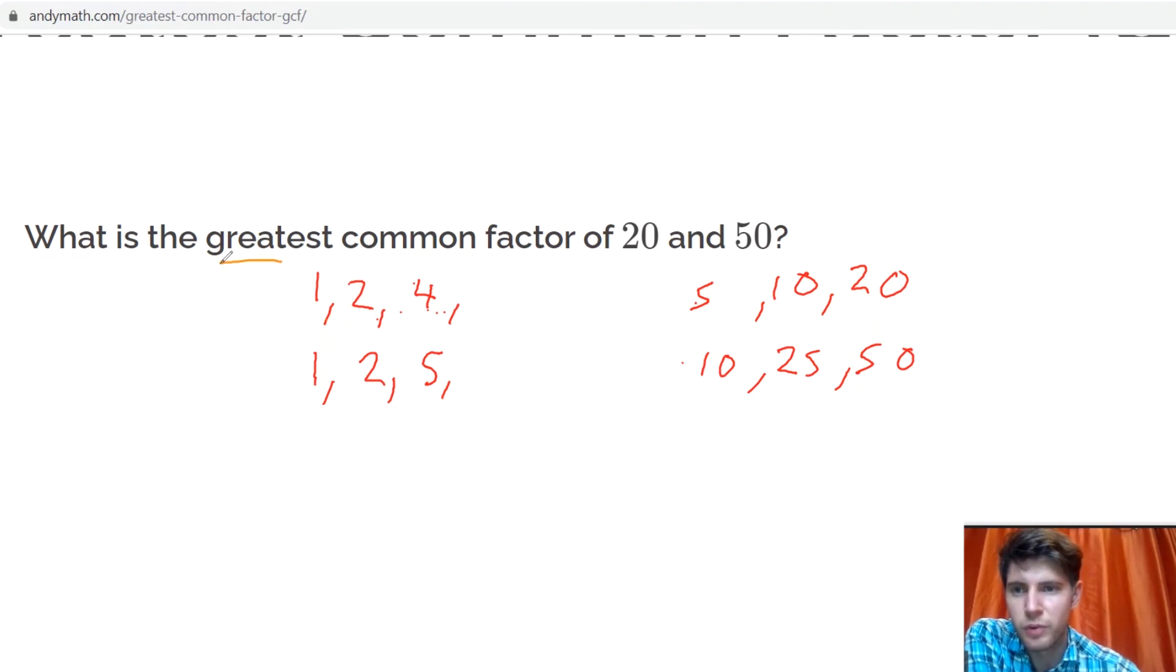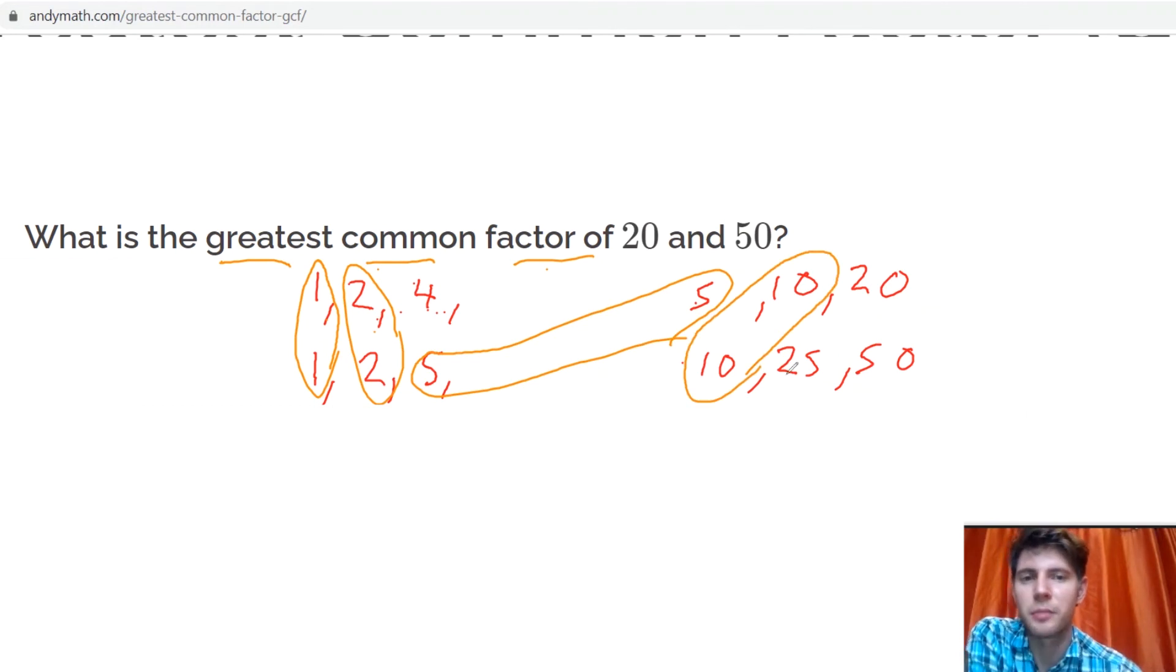This says the greatest common factor. Notice how we have a lot of common factors. We have 1, we have 2, we have the 5s, we have the 10s, and they want to know what is the greatest common factor. Well, the greatest one here is 10. So the answer to this question is 10. 10 is the greatest common factor.